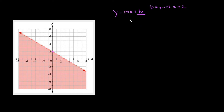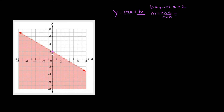The other thing we have to figure out is our slope, which is represented by m. The slope is equal to the rise over the run. To figure out the slope we basically need two points — we already found one point, so now we need to find another point that this line runs through.